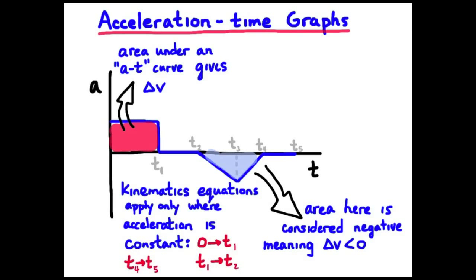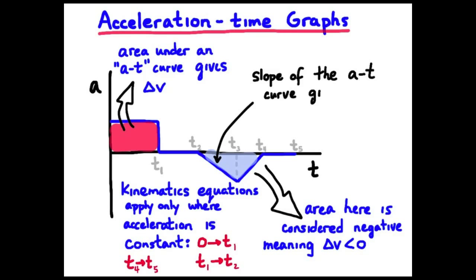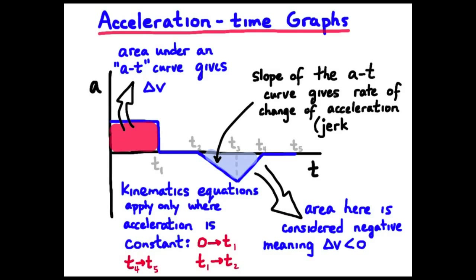The area below the time axis is considered negative, meaning the change in velocity is less than zero. The slope of an AT graph gives a new physics quantity called jerk — a measure of the rate of change of acceleration. Jerk units: rise in meters per second squared over run in seconds gives meters per second squared per second, or meters per second cubed.